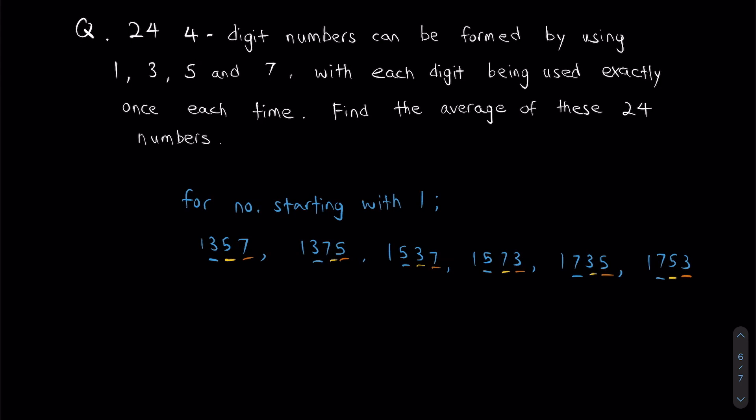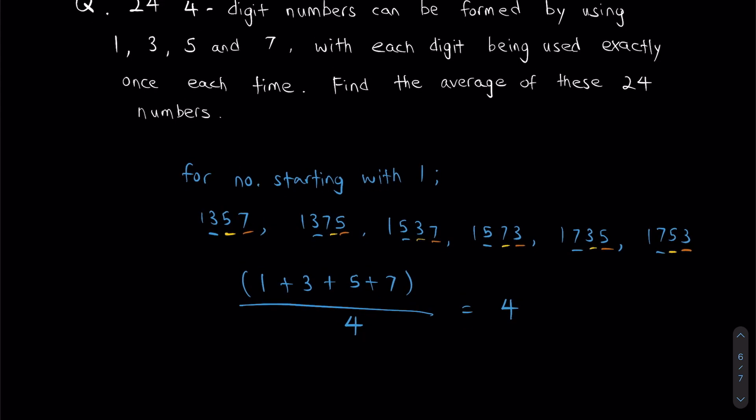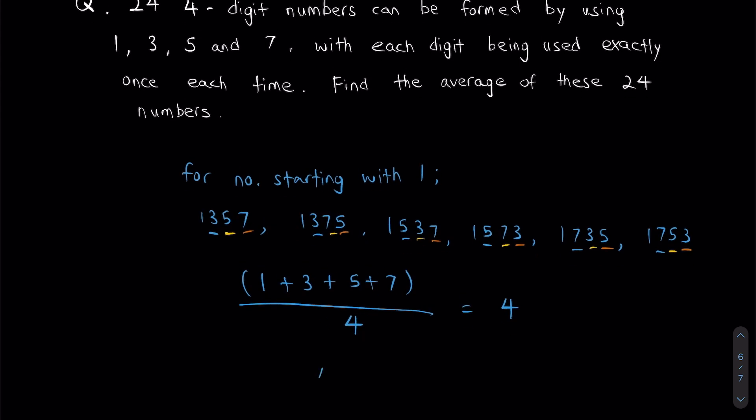First, find the average of these four numbers, so it's basically adding them all together divided by 4. This will give me 4. This is where the really cool thing happens. If we noticed what we noticed before about the hundreds, tens, and ones digits, our average of these 24 numbers will just be 4444. This will be my answer.